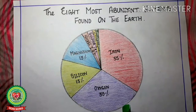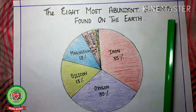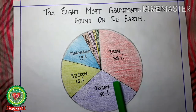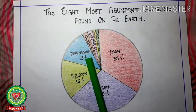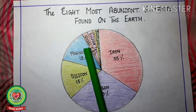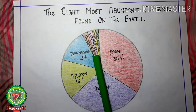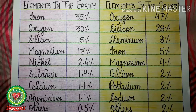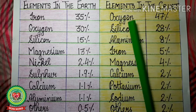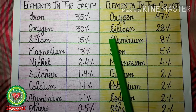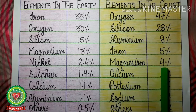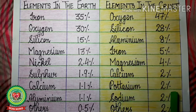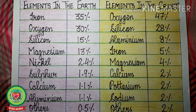We know that the whole earth is made up of elements. The 8 most abundant elements found in the earth are shown in this pie diagram: Iron 35%, Oxygen 30%, Silicon 15%, Magnesium 13%, Nickel 2.4%, Sulphur 1.9%, Calcium 1.1%, Aluminium 1.1%. The 8 most abundant elements in the earth's crust are: Oxygen 47%, Silicon 28%, Aluminium 8%, Iron 5%, Magnesium 4%, Calcium 2%, Potassium 2%, Sodium 2%, and other elements 2%.